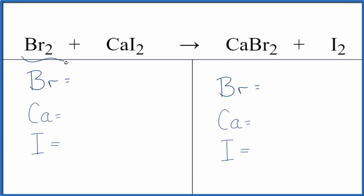Let's balance the equation for Br2 plus CaI2. This is bromine gas, this is calcium iodide. We'll also look at the type of reaction.